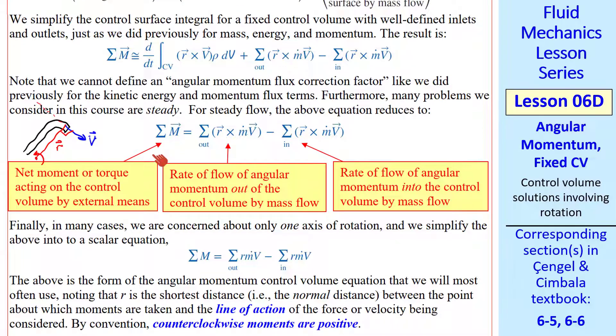I've labeled the terms. This is the net moment or torque acting on the control volume by external means. This is the rate of flow of angular momentum out of the control volume by mass flow. And this is the same thing, but into the control volume at inlets.